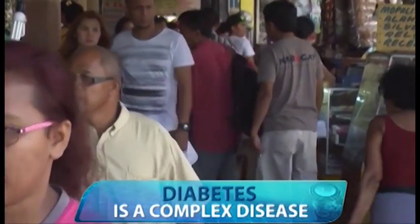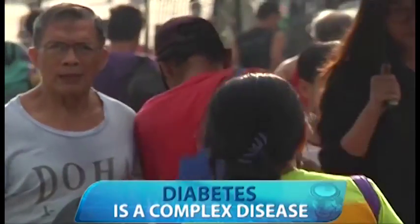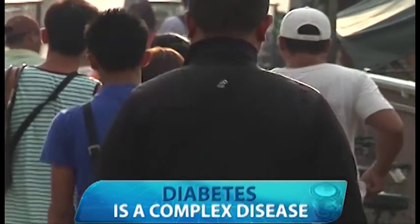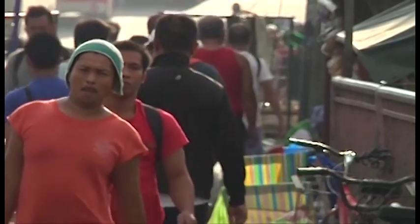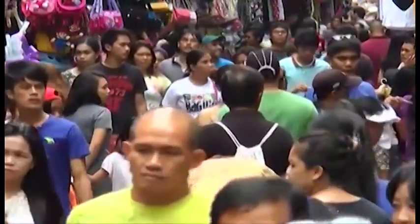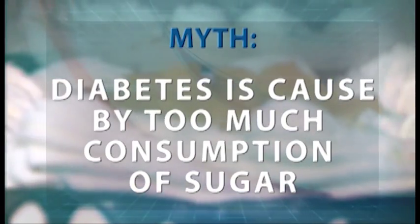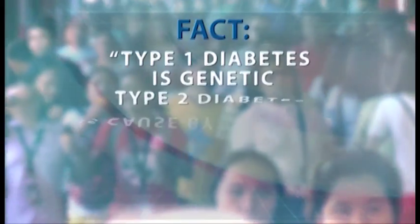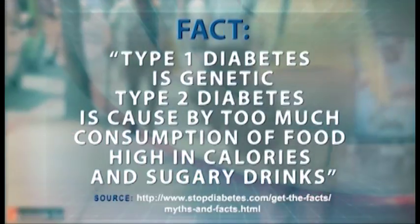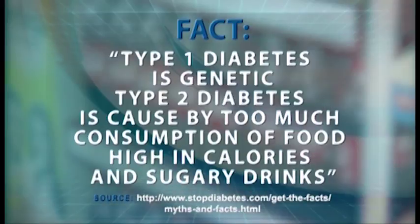Ang sakit na diabetes ay isang complex disease. Hindi ito kagaya ng ilang karamdaman na mayroong sintomas, malibang ikaw ay magpakonsulta. Kaya marami ang lumutang na maling paniniwala o sabi-sabi sa sakit na ito dahil sa kakulangan ng kaalamang medikal. Narito ang ilan sa mga myths and facts pagdating sa diabetes. Myth: Ang diabetes ay bunga ng pagkain ng sobrang matatamis. Fact: Ang type 1 diabetes ay genetic o namamana. Ang type 2 diabetes naman ay maaaring makuha sa pagkonsumo ng pagkain na mataas ang calories at ang palaging pag-inom ng sugary drinks.